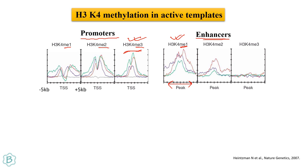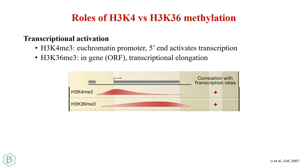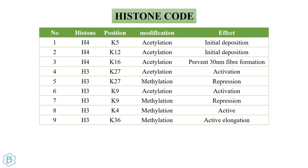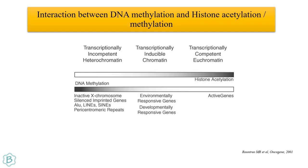K4 methylation at eukaryotic promoters leads to activated transcription, and K36 methylation in the gene body or ORF region helps in transcriptional elongation. So H3 K4 methylation is an active mark and K36 methylation is responsible for active elongation. Now considering interaction between DNA methylation and histone acetylation: transcriptionally incompetent heterochromatin has very low histone acetylation and very high DNA methylation.